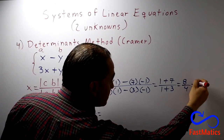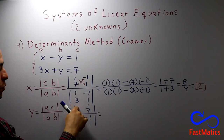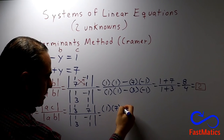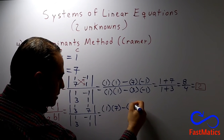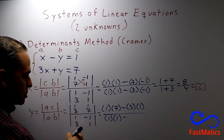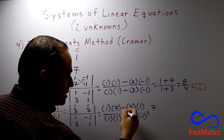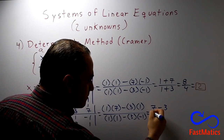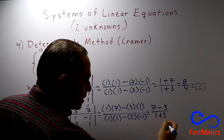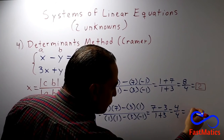8 divided by 4 equals 2, so x equals 2. For y: 1 times 7 is 7, minus 3 times 1 is 3, so the numerator is 7 minus 3 = 4. The denominator: 1 times 1 is 1, minus 3 times negative 1 gives plus 3, so the denominator is 1 plus 3 = 4. Therefore, 4 divided by 4 equals 1, so the value of y is 1.